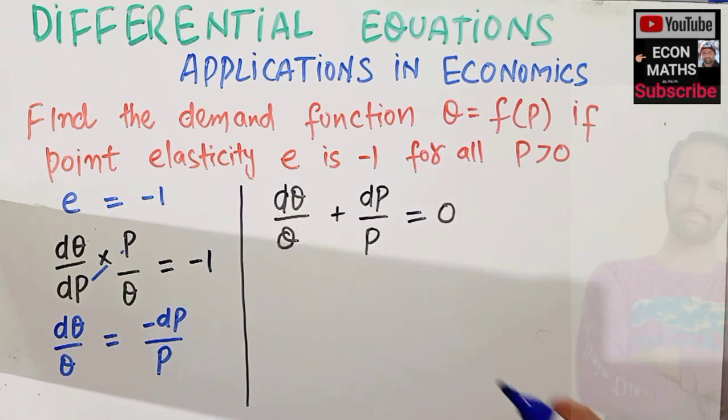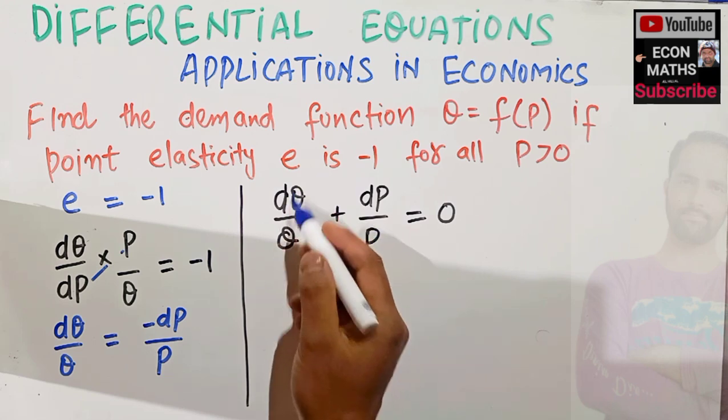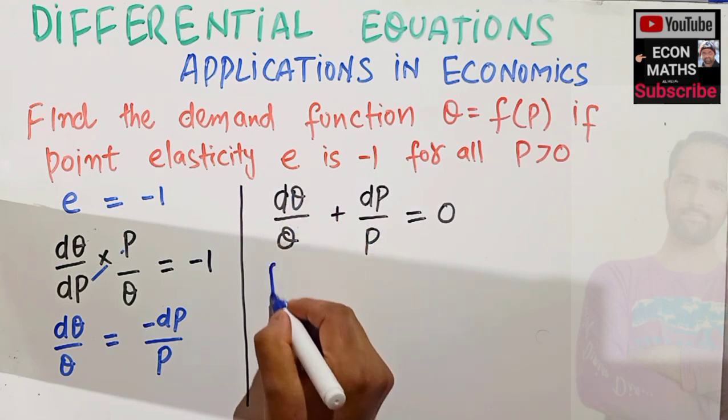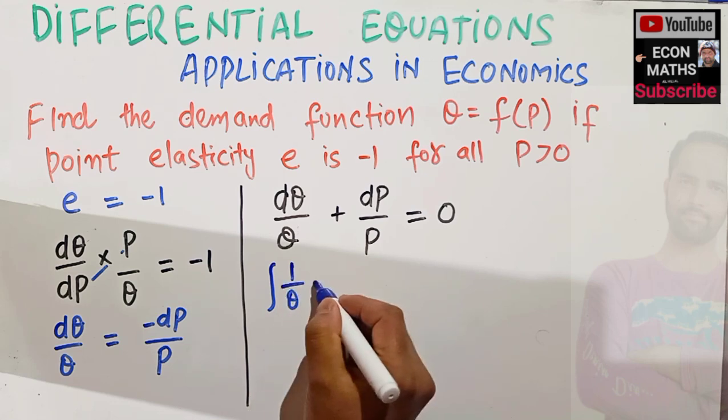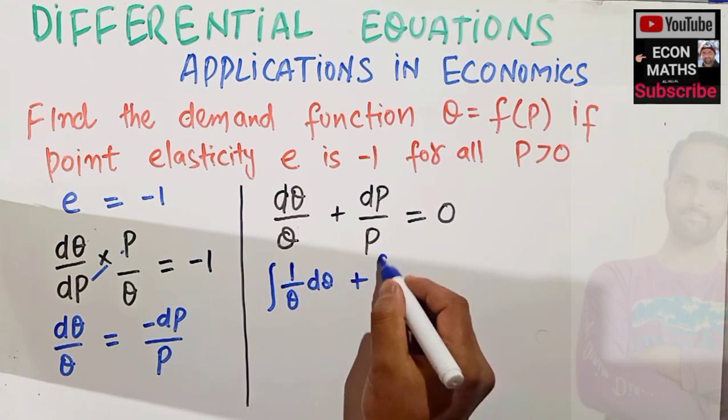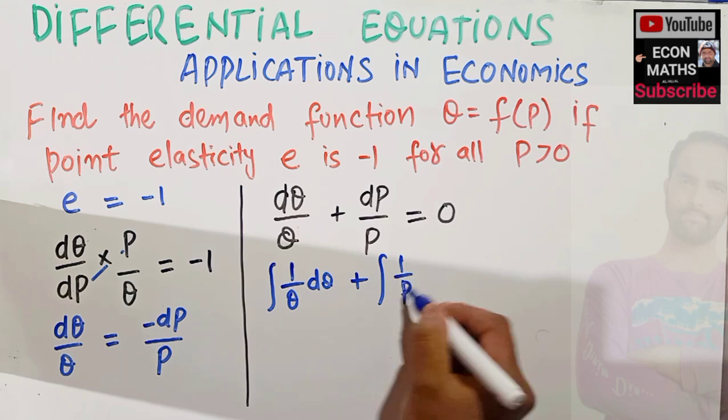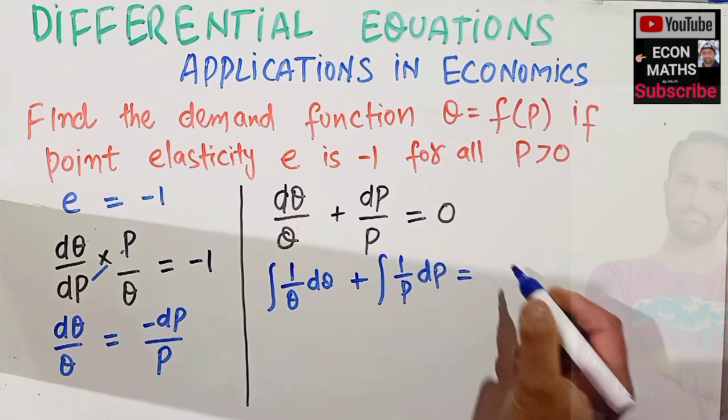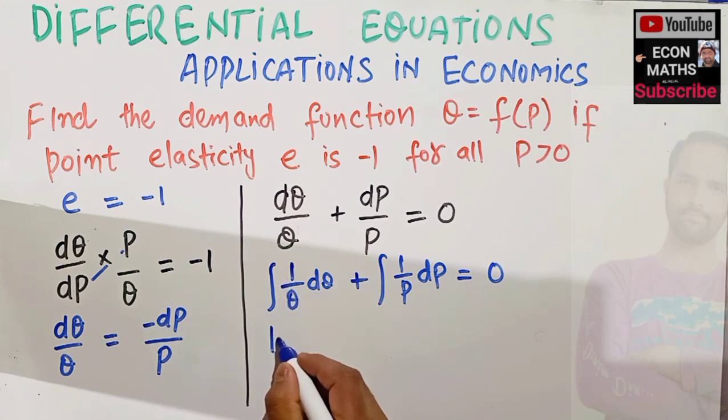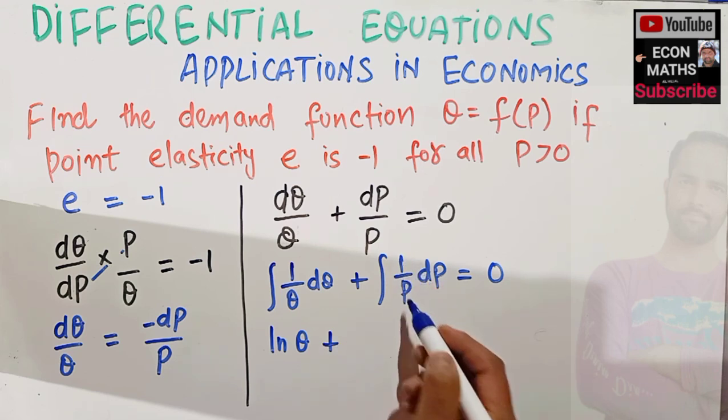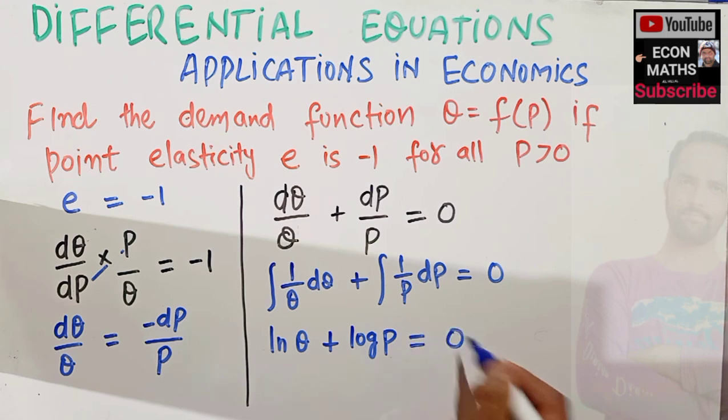Now integrating, if we integrate dQ upon dP, let me write it here, we can write it in this fashion: one upon Q dQ plus one upon P dP is equal to zero. Here now one upon Q is simply log of Q plus one upon P is log of P is equal to zero.